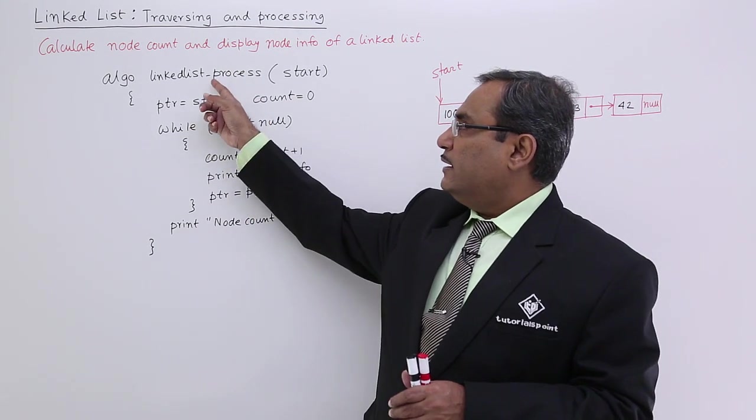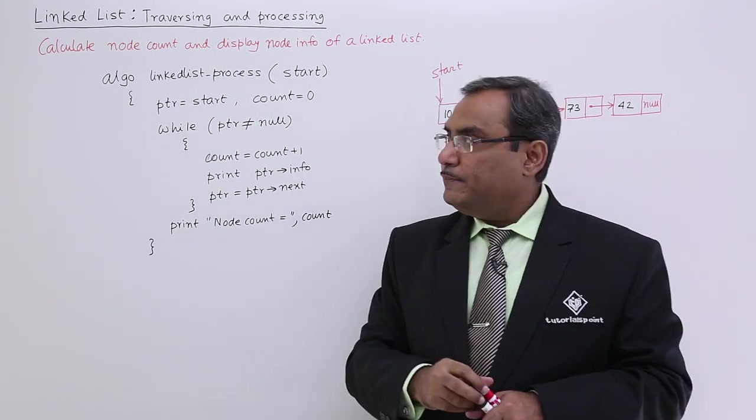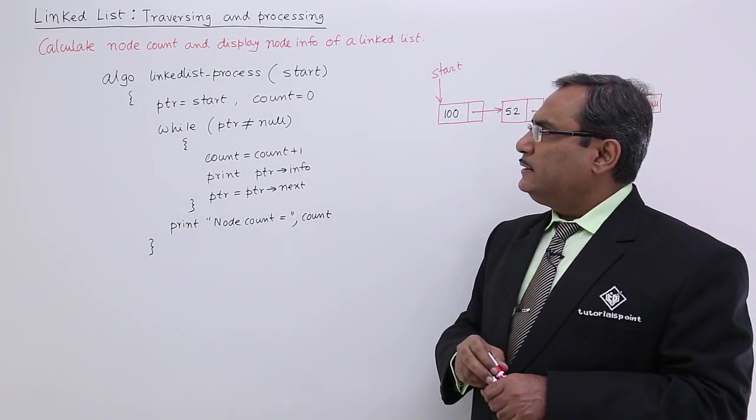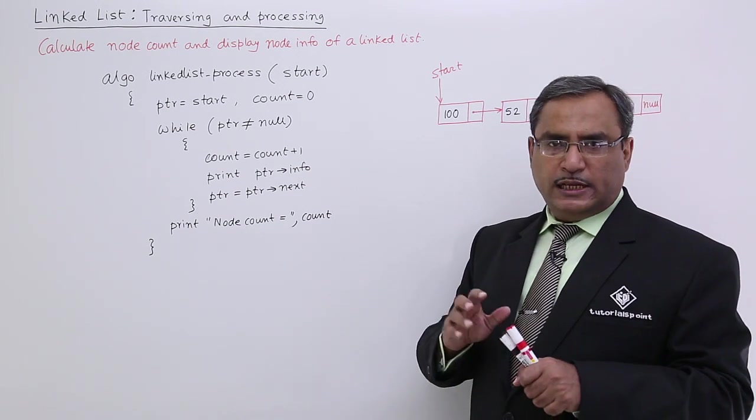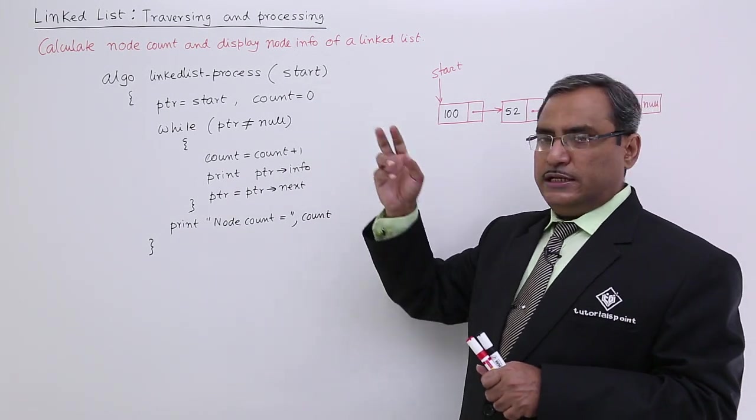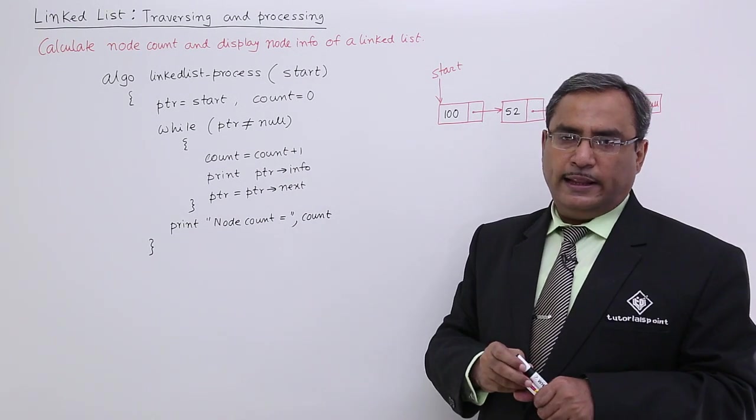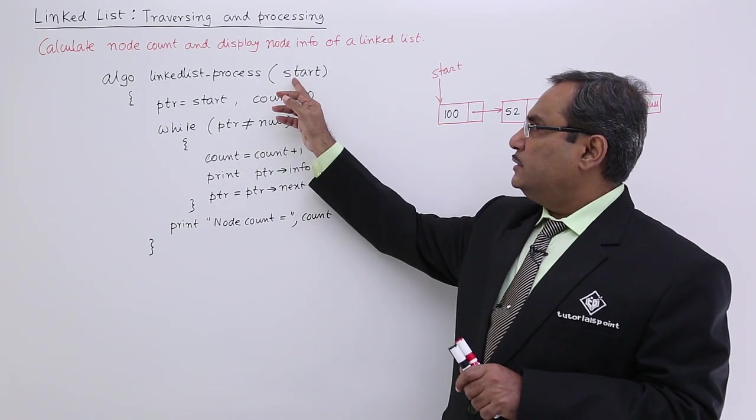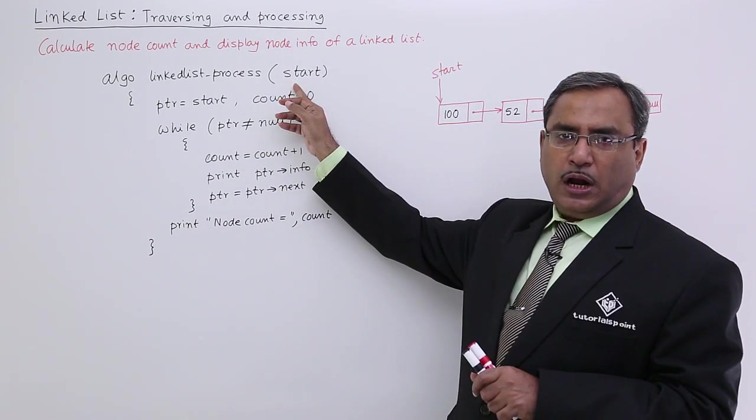This is the question and I can write the algorithm in this way. Algorithm linked list process. I have given this particular name and start is just pointing to the starting address of the linked list. Now this start has been taken as input argument.